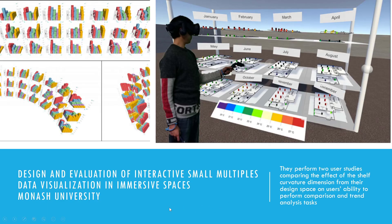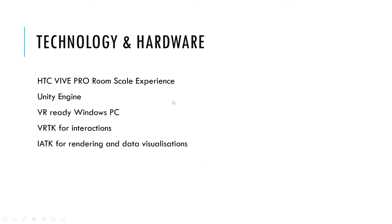The first paper I want to present is the design and evaluation of interactive small multiples data visualizations in immersive spaces from Monash University. They performed two user studies comparing the effect of shelf curvature dimensions from their design space on users' ability to perform comparison and trend analysis tasks. The technology used includes the HTC Vive Pro with room-scale experience, the Unity Engine, a VR-ready Windows PC, the VRTK for interactions, and IATK for rendering and data visualizations.